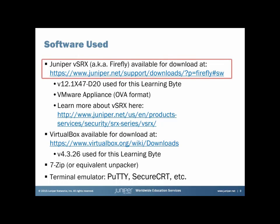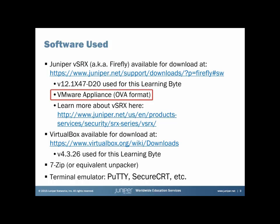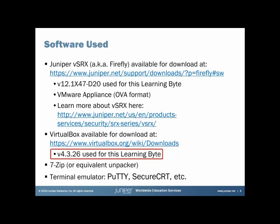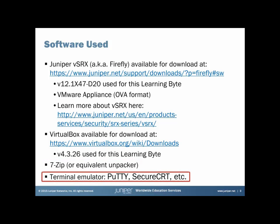Software used in this learning bite includes the VSRX image available for download at the URL listed. This learning bite uses version 12.1x47-d20, the VMware Appliance OVA format version. VirtualBox is also available for download at the URL listed; this learning bite assumes you have it installed and at least some familiarity with it — version 4.3.26 was used here. You'll also need some sort of unpacker like 7-zip, and finally some sort of terminal emulator — PuTTY, SecureCRT, or whatever you prefer.